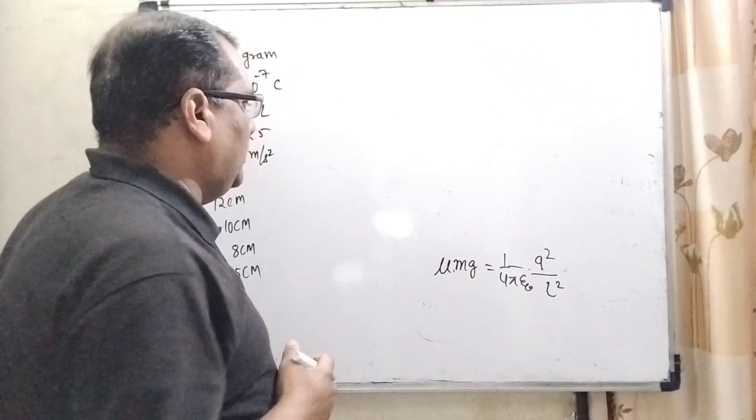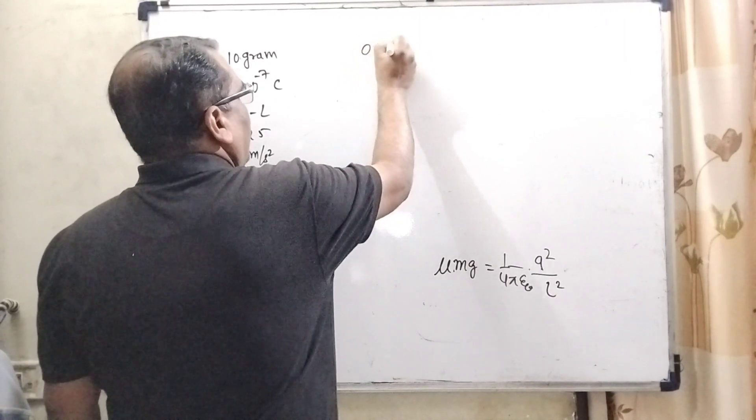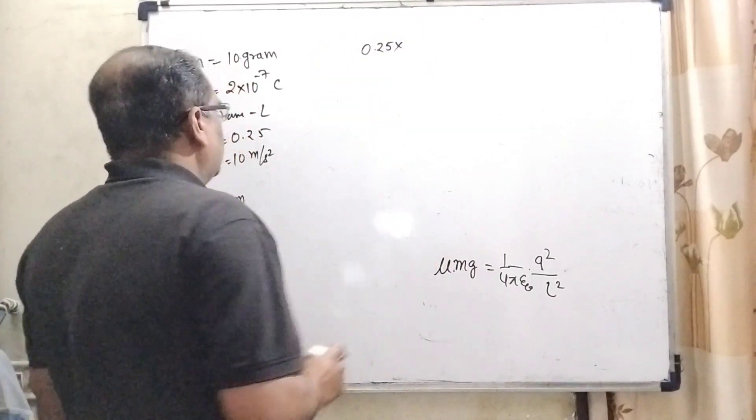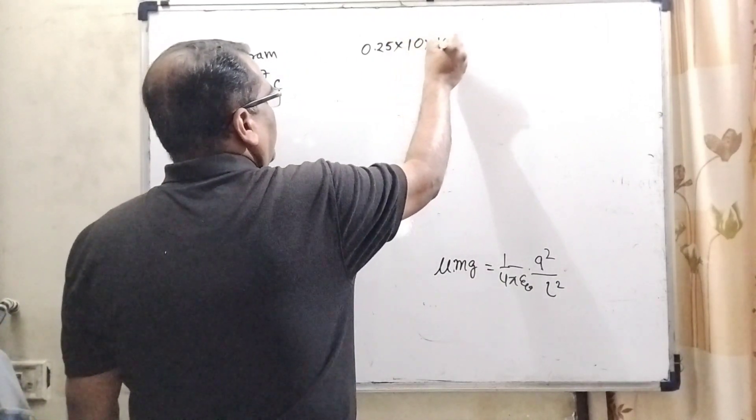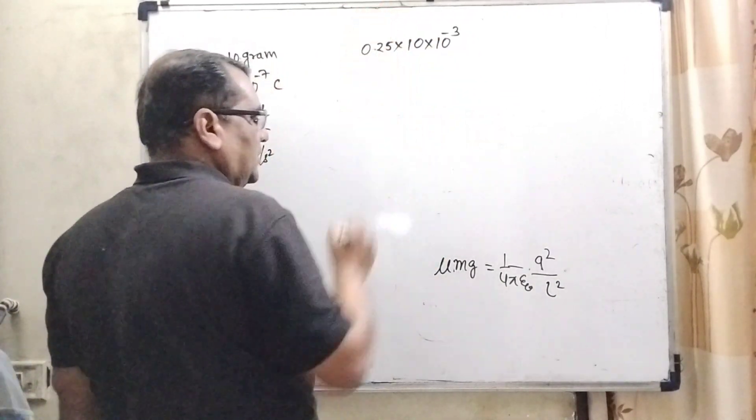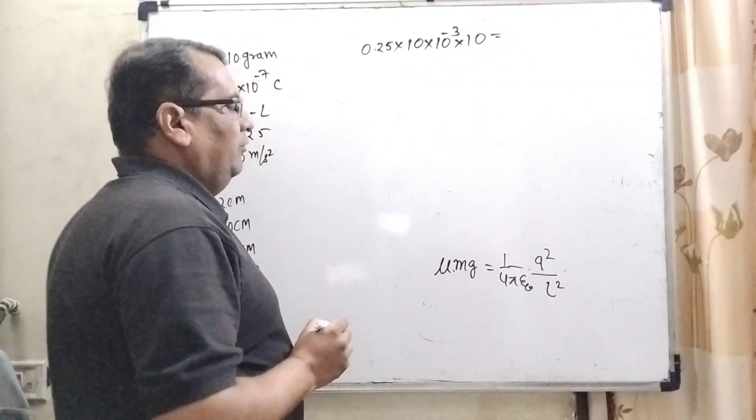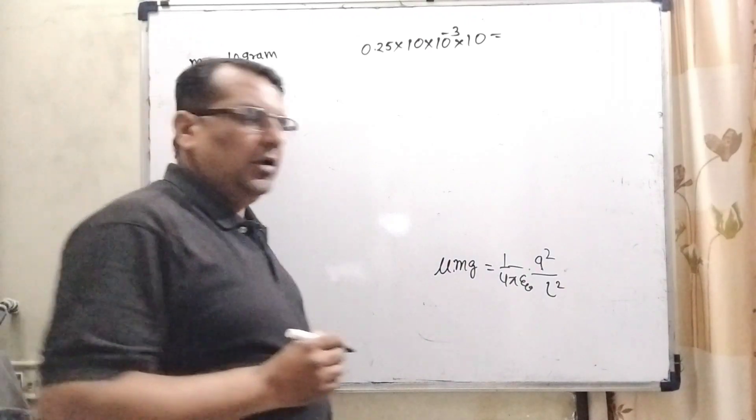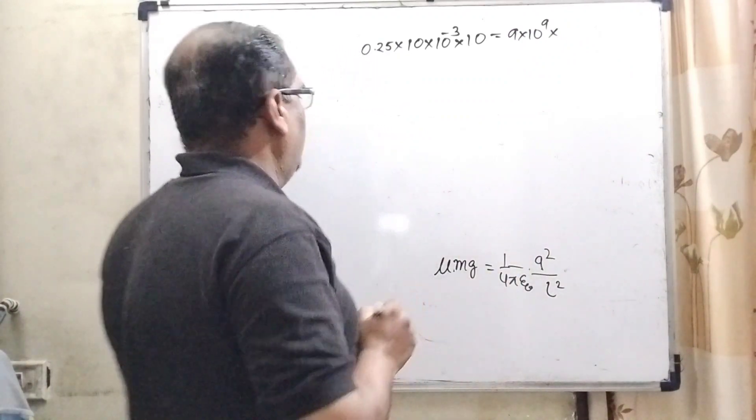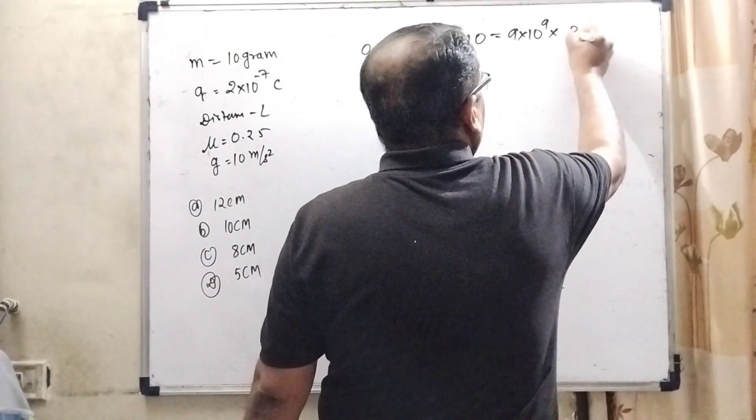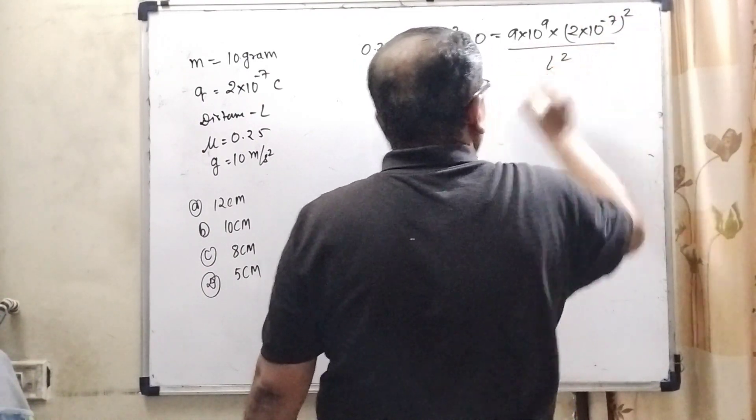Now substitute all values. What is the value of μ? μ is given as 0.25. What is the mass of the charge particle? That is 10 gram, convert into kilogram, that is 10⁻³ kg. And g is 10. Here the value of 1/4πε₀ is 9×10⁹. And Q is 2×10⁻⁷ whole square upon L².